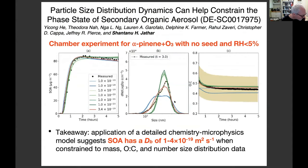Jathar, with Jimenez on deck. This work is by graduate student Yi Kang-Hai at Colorado State University. We're exploring whether chamber data for alpha-pinene ozonolysis under nucleation conditions and low relative humidity can be leveraged to explain the particle phase state of alpha-pinene SOA. The figure shows model predictions for various bulk diffusion coefficients versus measurements of SOA mass concentrations, O:C ratio, and number size distribution evolution. Our model constrains SOA bulk diffusivity for alpha-pinene ozonolysis to between 10⁻¹⁹ m²/s, which is in the semi-solid region and has implications for gas-particle partitioning.